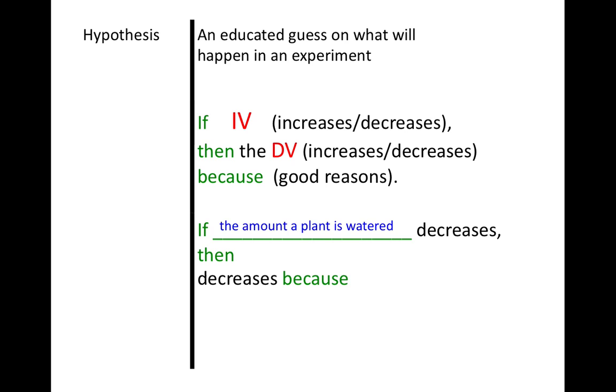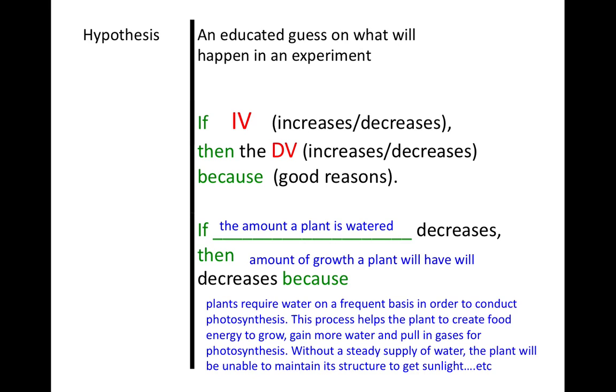Then the amount of growth a plant will have will also decrease, because—and as you can see, I have a very long explanation which is not even completed. There's multiple sentences and it could go on for a while, and I might very well need to cite something if I did use some information that I had read. So just to give you an idea of how to write a hypothesis.